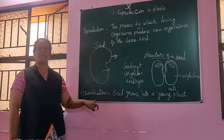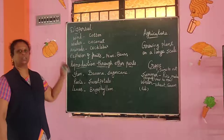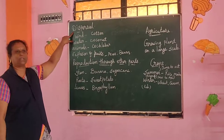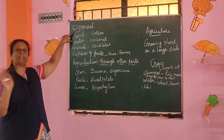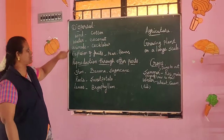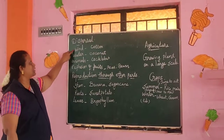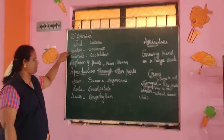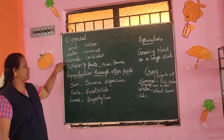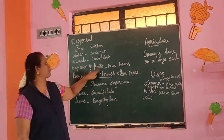Seeds are dispersed by four types: dispersal by wind, dispersal by water, dispersal by animals, and dispersal by explosion of fruit.